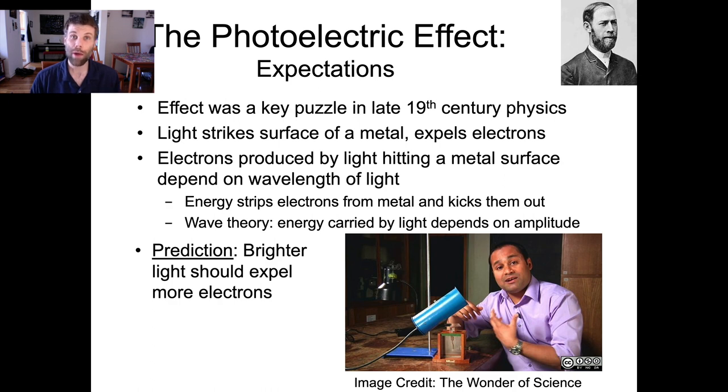Knowing what we know about how light is supposed to work, according to 19th century physics, you could make a definite prediction for one type of behavior that you should see in experiments studying the photoelectric effect. And that is that as the light gets brighter, that is its amplitude increases, then the increased energy in the light should liberate more electrons. That's just basic wave mechanics.